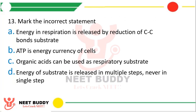Question 13: Mark the incorrect statement. Option A: energy in respiration is released by reduction of C-C bond substrates. Option B: ATP is the energy currency of the cell. Option C: organic acids can be used as respiratory substrates. Option D: energy of a substrate is released in multiple steps, never in a single step. The correct answer is option A — it is incorrect because energy in respiration is released by oxidation of C-C bond, not reduction.